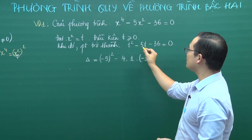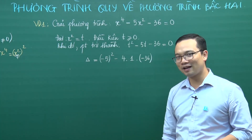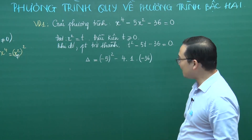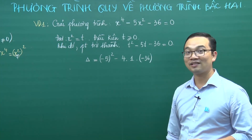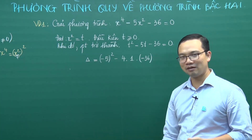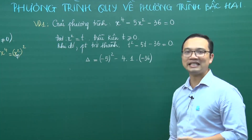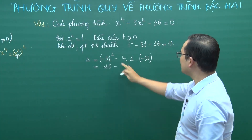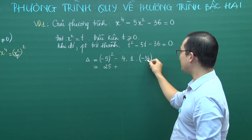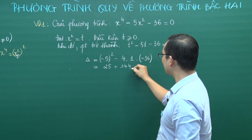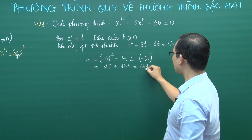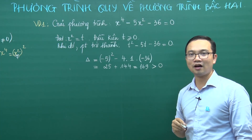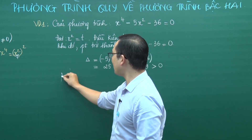Δ = 169 > 0, chứng tỏ phương trình có 2 nghiệm phân biệt. T₁ = (-B + √Δ) / (2A) = (5 + 13) / 2 = 18/2 = 9. T₂ = (5 - 13) / 2 = -8/2 = -4. Dựa vào điều kiện t ≥ 0: T₁ = 9 thỏa mãn, T₂ = -4 loại.